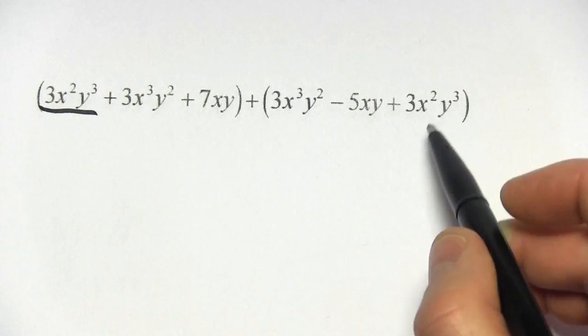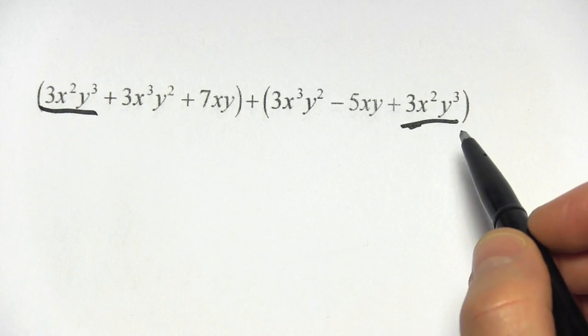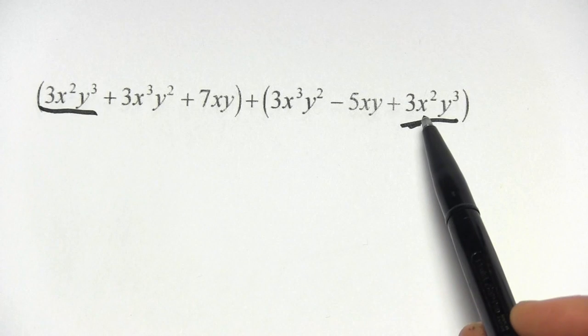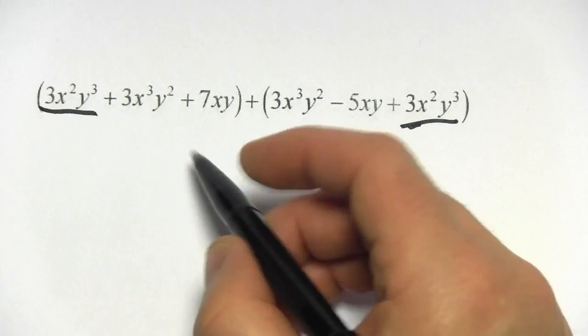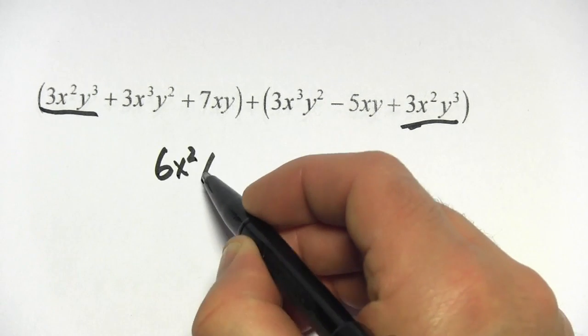That's x cubed. Aha! So that is x squared y cubed. And both of these are positive 3. So we can just add those together. 6x squared y cubed.